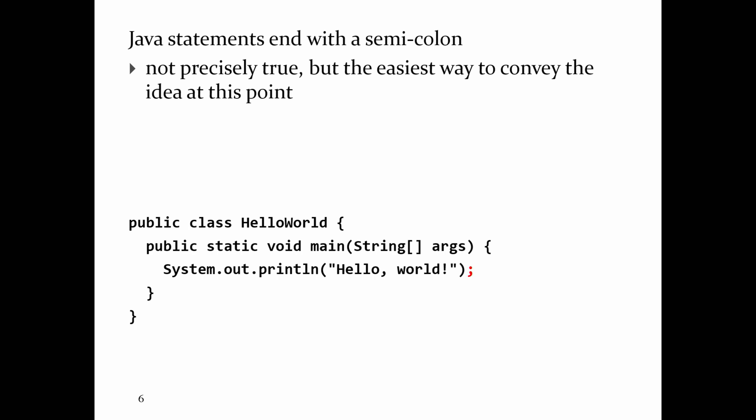One of the criticisms leveled at Java is that there's a lot of stuff you eventually need to know just to print hello world. For new programmers, there are a lot of questions like: does it have to be public? Does it have to be static? Does it have to be void? What do these mean? All I want to do is print hello world. It's just the way the language was created.